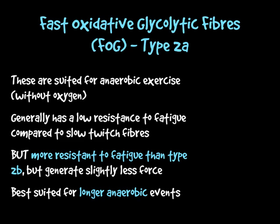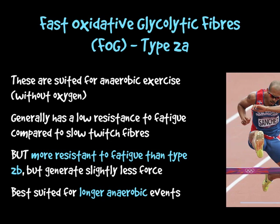Type 2A fibres are best suited for longer anaerobic events — not short distance or short time events, but something such as 400 metre hurdles or 400 metres running. These days athletes are very quick over 800 metres, so at top level you could also suggest 800 metres could be useful for type 2A muscle fibres. So 200 metres, 400 metres, and possibly 800 metres at elite level would be based around type 2A fibres.